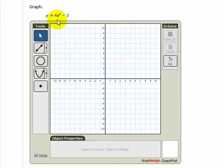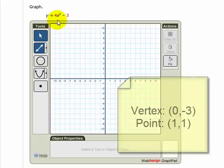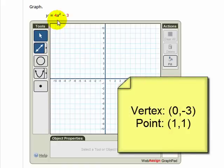In this case we have a parabola that opens up. To use the graphpad parabola tool, we need to know both the vertex and a point on the parabola. In this case, we know the vertex is at 0, negative 3, and we know that another point on the parabola is at 1, 1.